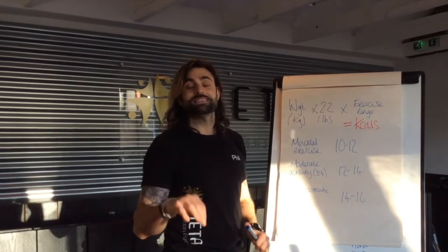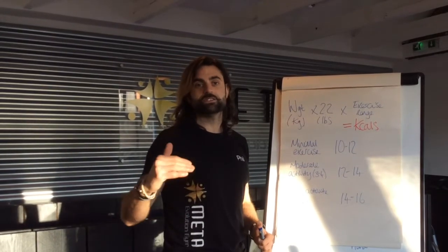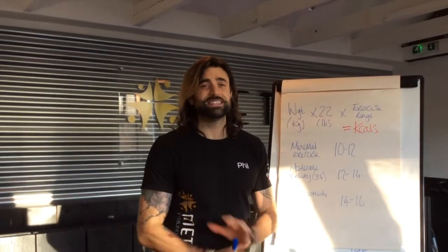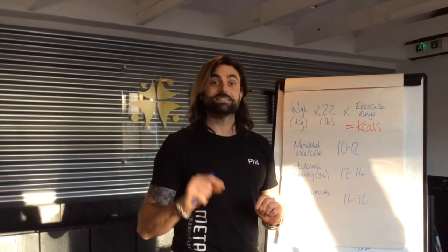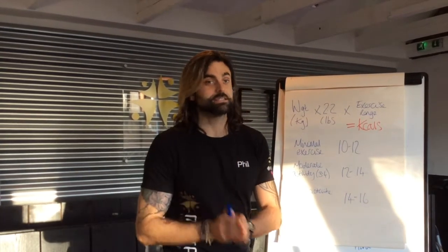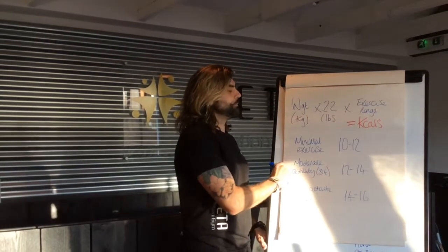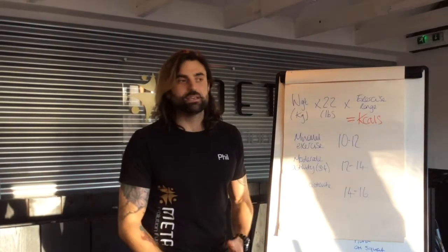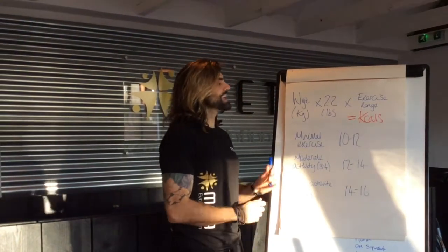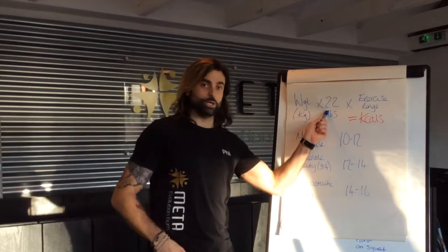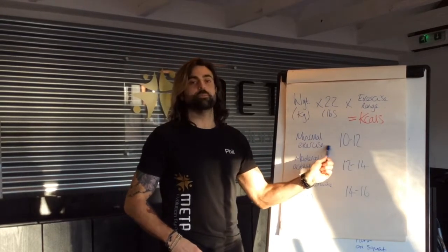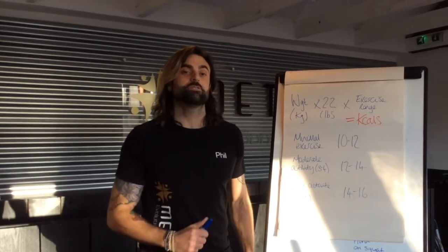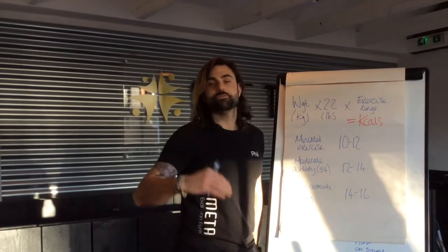We're talking about an allowance, so we're not specifically saying you have to hit this target. The example we're using today is for weight loss — this is a very basic weight loss strategy to set up on MyFitnessPal. So if you are doing minimal exercise — not exercising, maybe just daily activity like walking to and from work — you would take your weight in pounds and times it by between 10 and 12, so roughly times it by 11. That would give you your ultimate calorie intake for the day.